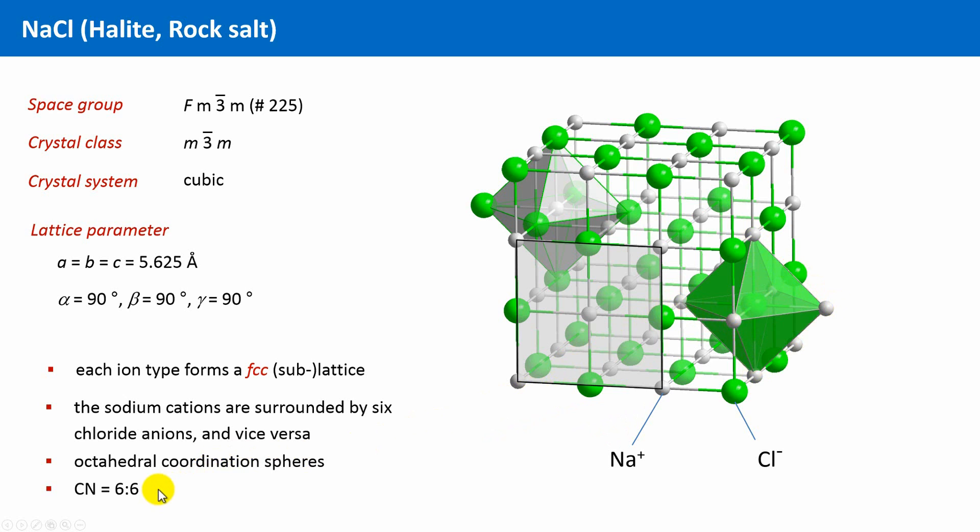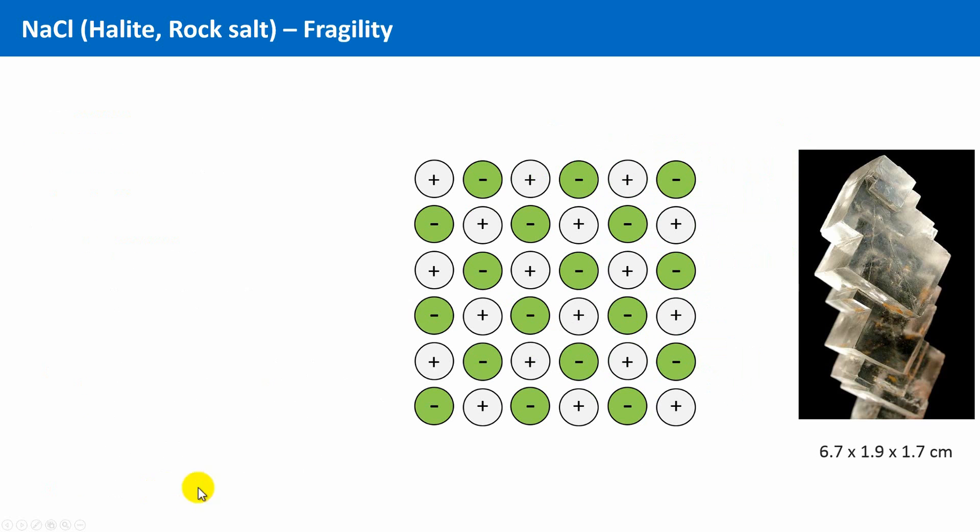This brings me to the next point. Here you see a beautiful picture of very well-developed halite cubes, intergrown, but relatively large. There is one reason why the occurrence of such big and well-developed halite cubes is rare. Because halite is very fragile, very brittle.